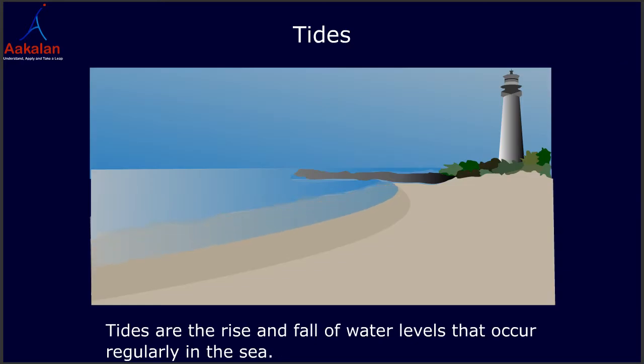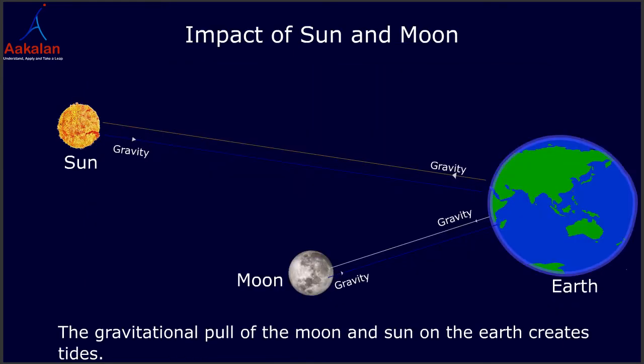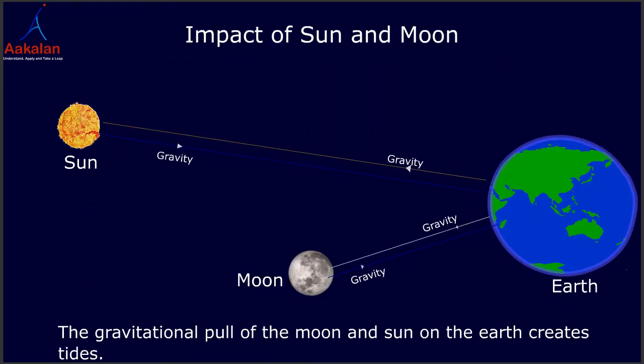Tides are the rise and fall of water levels that occur regularly in the sea. The gravitational pull of the moon and sun on the earth creates tides.